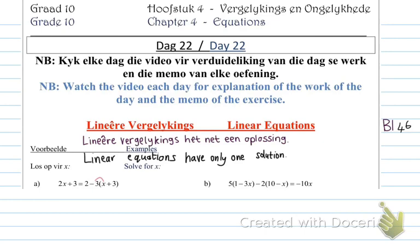We are doing linear equations — we also did this in Grade 9. Linear equations have only one solution, meaning there's only one answer for x. We will also get to those that have two answers for x. Let's start. Example (a): solve for x. I see a bracket with something in front of it, so I'm going to multiply that in. I have 2x plus 3 equals 2, then I multiply in negative 3: negative 3 times x is negative 3x, and negative 3 times 3 is negative 9.